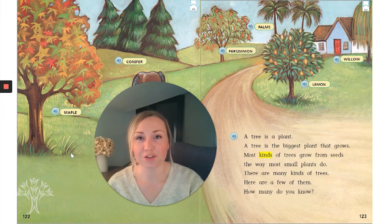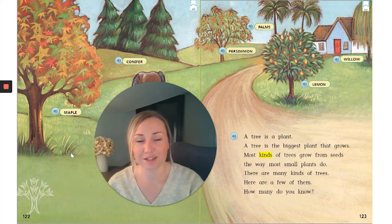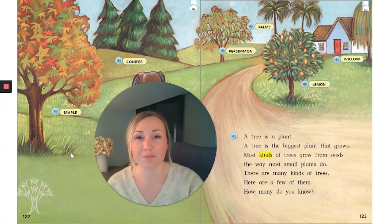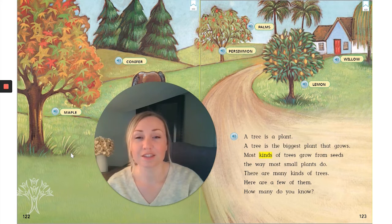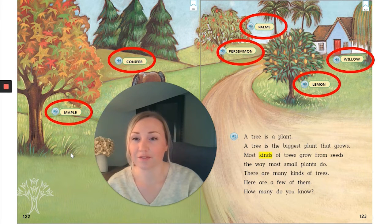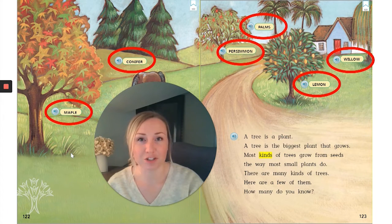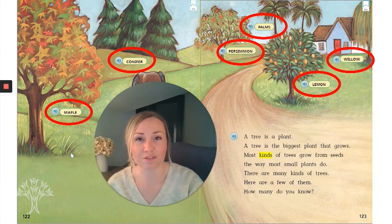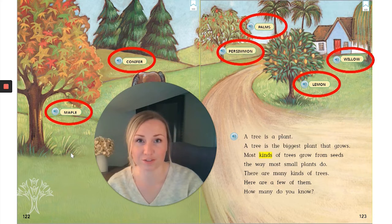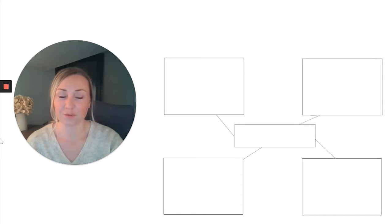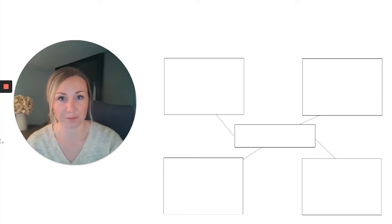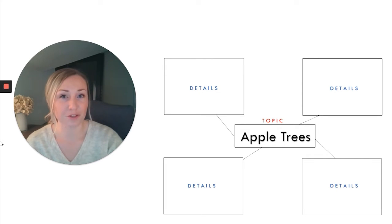On this page, the author uses labels. This text feature is not part of the main body of the text. These words are outside of the paragraph, labeling parts of the picture. This makes them a nonfiction text feature. As we read our text today, we are going to be listening for facts about our topic. Our topic is apple trees. The facts that we listen for are called details. The details help support us learning about the topic.